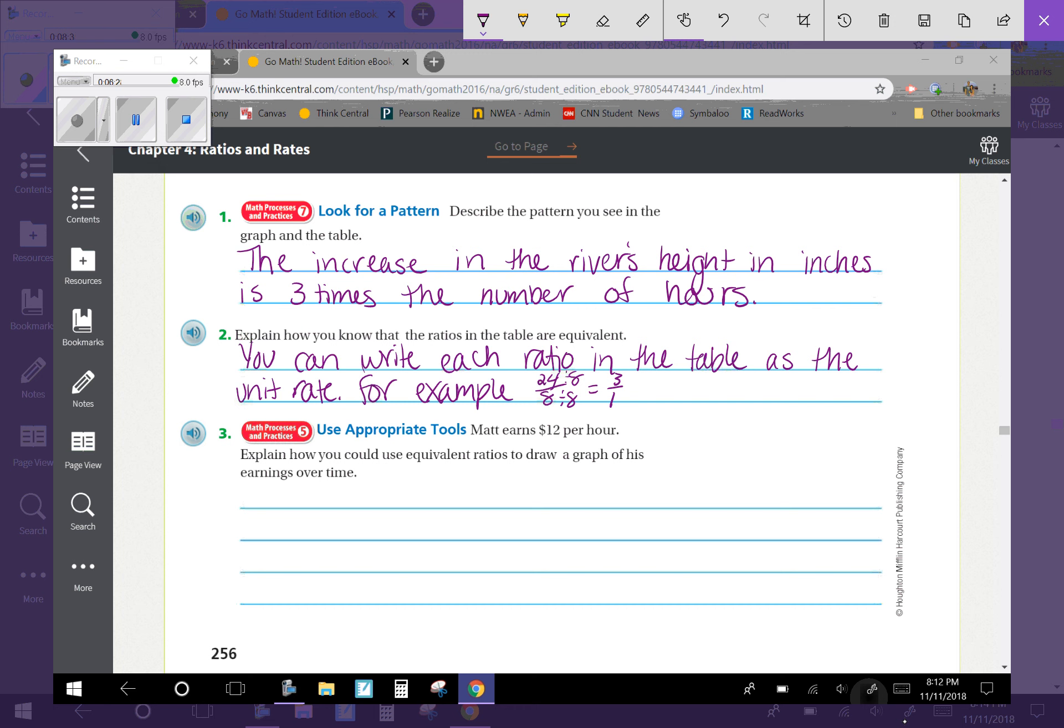The last one says number 3, appropriate tools. Matt earned $12 per hour. Explain how you could use equivalent ratios to draw a graph of his earnings over time. For that, what you would do is you would just make a table of equivalent ratios, and then you would use the table to write the ordered pair with the x and y representing time in hours and earnings in dollars. So just exactly what we did, but you'd just switch out increase with earnings pretty much.